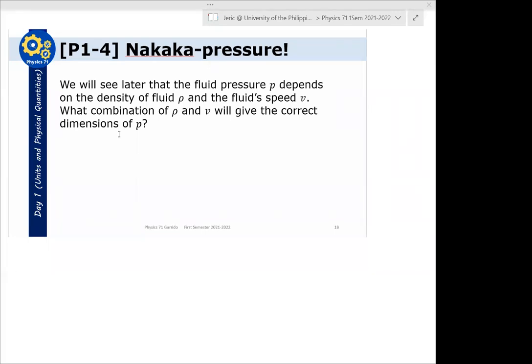So, we will see later, again, as I said, we have fluid pressure is a function of density, and so it's proportional to some density, some function of density and velocity. Now, this is the thing. Of course, what you can do is, what if I just add them rho plus V? You cannot do that because we know that density and speed are not of the same units.